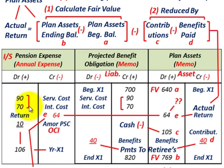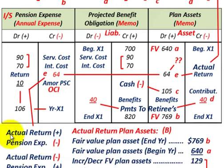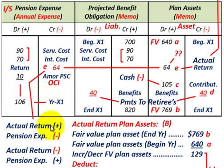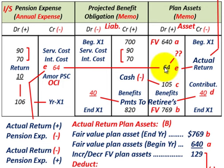A debit amount increases our pension expense, and a credit actually reduces our pension expense based on the actual return. So if we actually had an increase over the year — meaning our ending balance was greater than our beginning balance — then our actual return would have been an increase. The actual return was an increase of $64,000, so that credit would reduce our pension expense by $64,000.